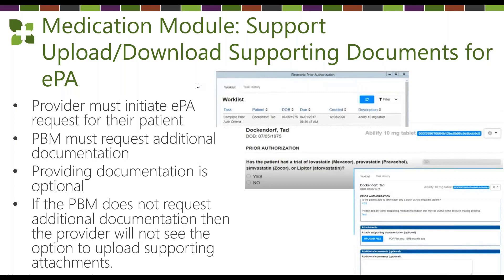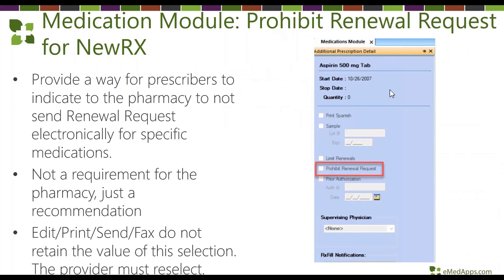Electronic prior authorizations will now allow you to upload and download supporting documents. Previously, if a payer came back requesting documentation we had no way to get that back to them through Next Gen. Now, if the payer or PBM requests additional documentation, you can upload and submit it back right from within the Next Gen application — though it can only be done upon request.